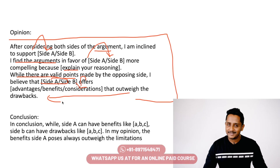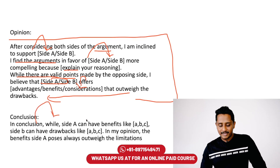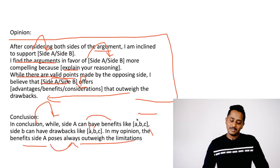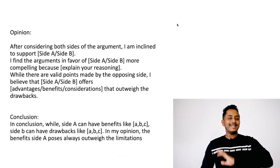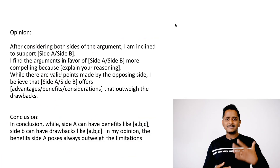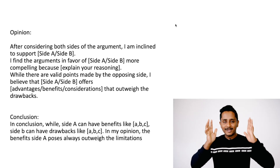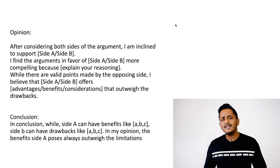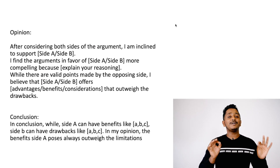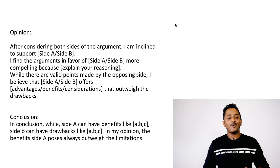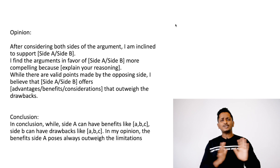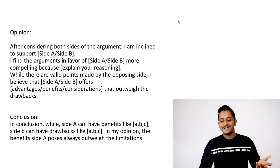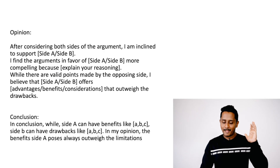Then conclude: 'In conclusion, while Side A can have benefits like A, B, C, Side B can have drawbacks like A, B, C. In my opinion, the benefits Side A poses always outweigh the limitations.' With this template handy, everything just flows — you know which structure to use, which words to use. The only thing you need to worry about is task response: supporting points. That's all it is, and getting Band 8 is not that difficult.